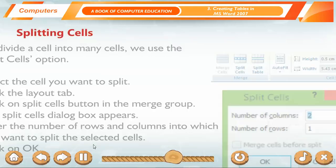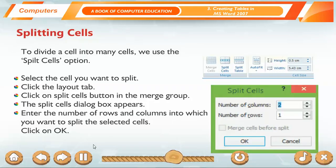Splitting Cells. To divide a cell into many cells, we use the Split Cells option. Select the cell you want to split. Click the Layout tab. Click on Split Cells button in the Merge group. The Split Cells dialog box appears. Enter the number of rows and columns into which you want to split the selected cells. Click on OK.